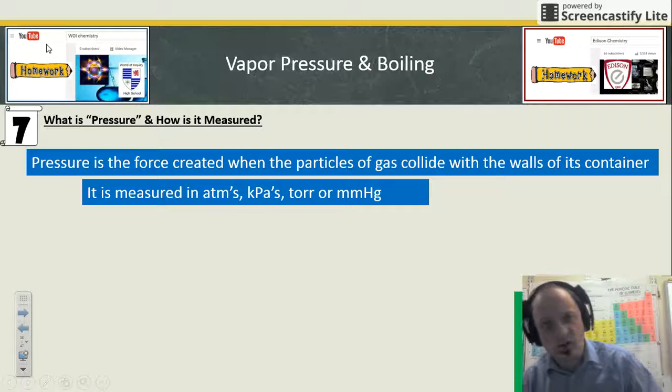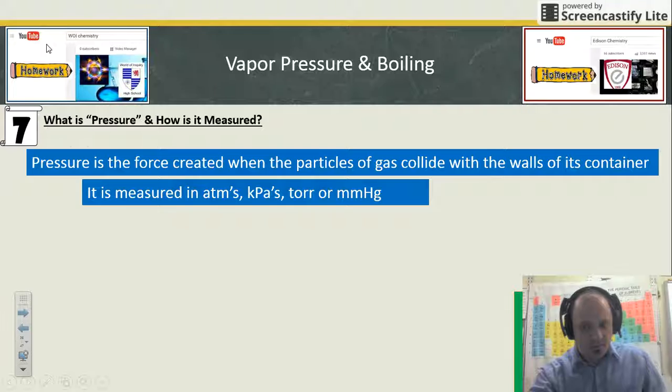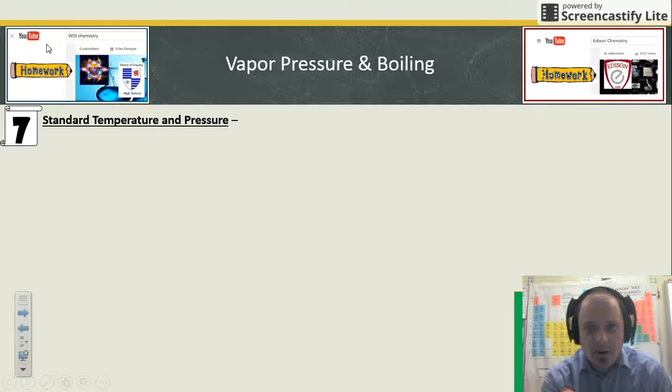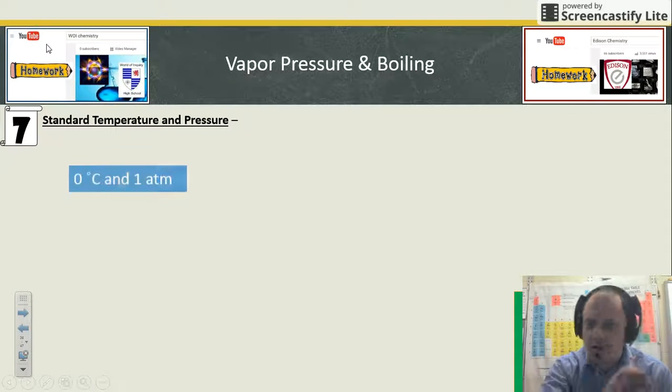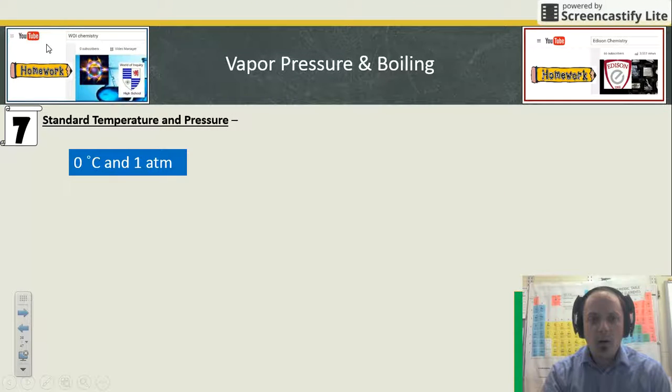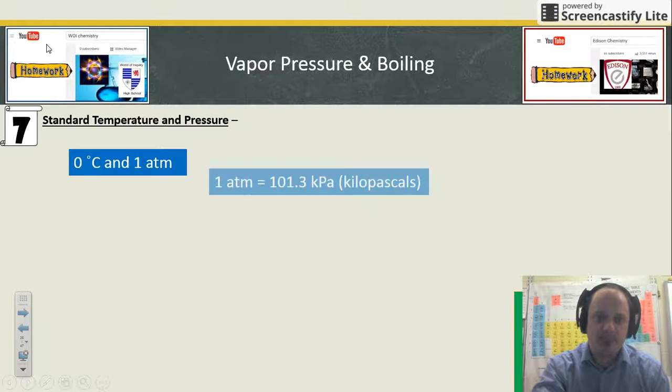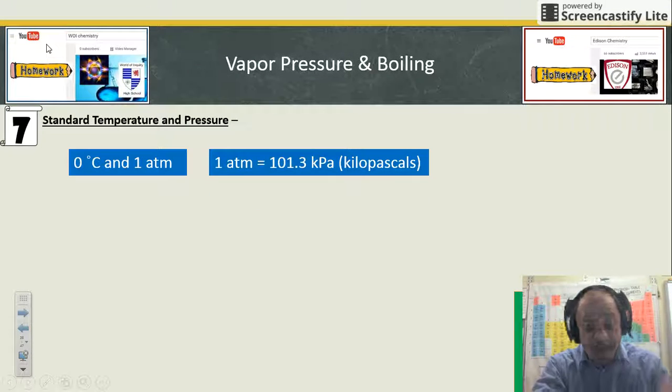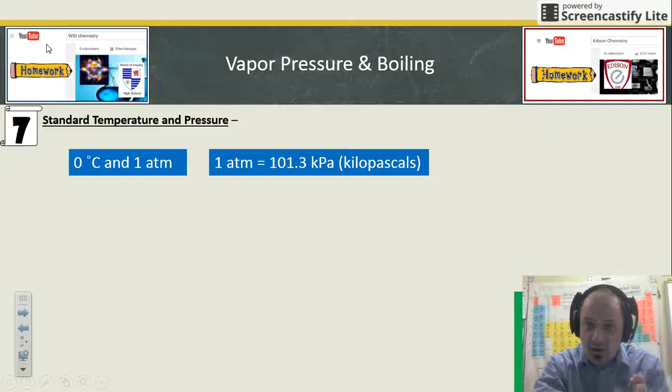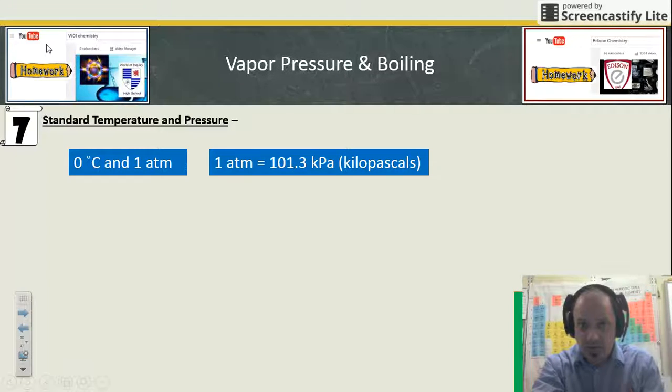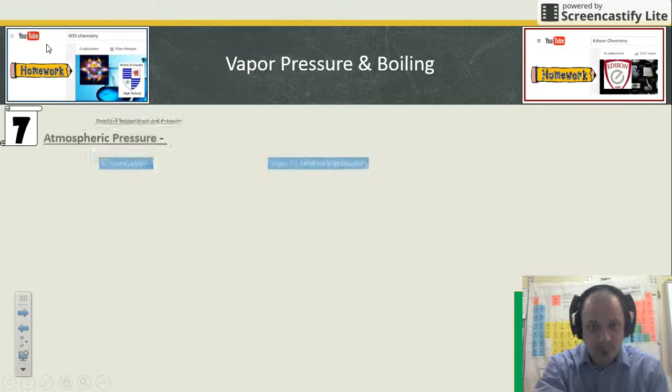Standard temperature and pressure—this is always going to be a stumbling point for people. Standard temperature and pressure is zero degrees Celsius, one atmosphere of pressure. It's the freezing point of water and one atmosphere pressure—that's STP. One atmosphere is equal to 101.3 kilopascals. Those two units are very closely related; memorize that conversion factor.